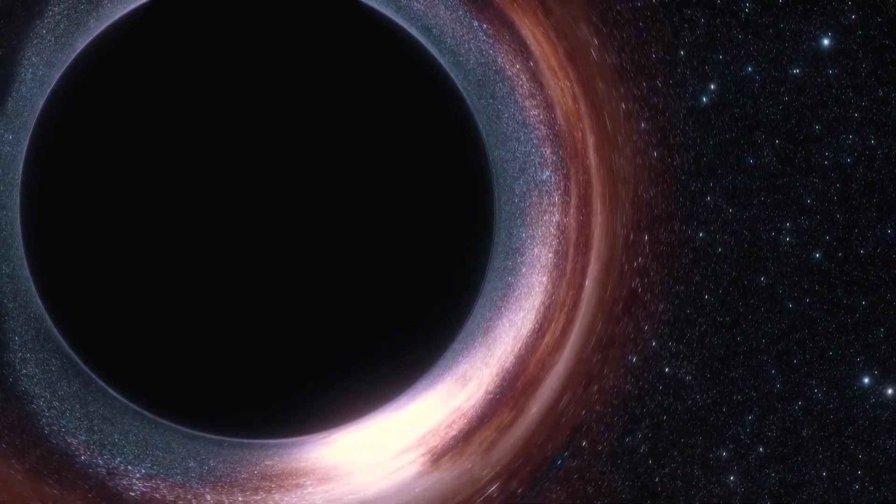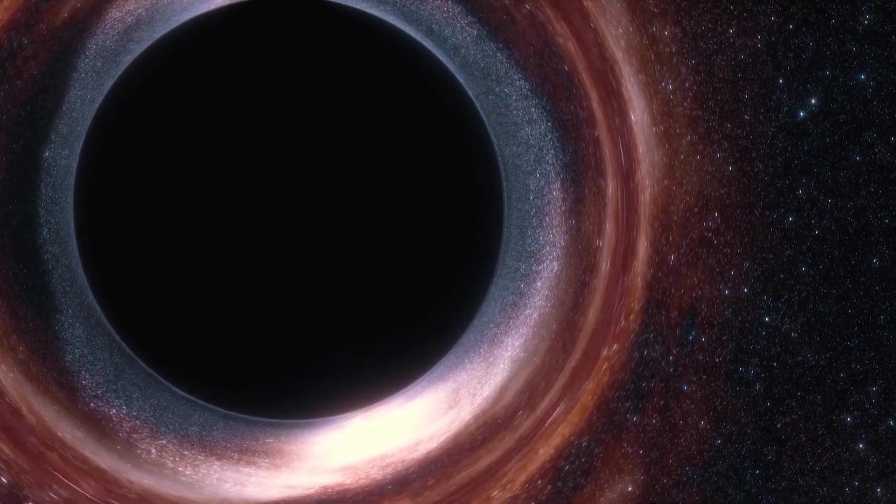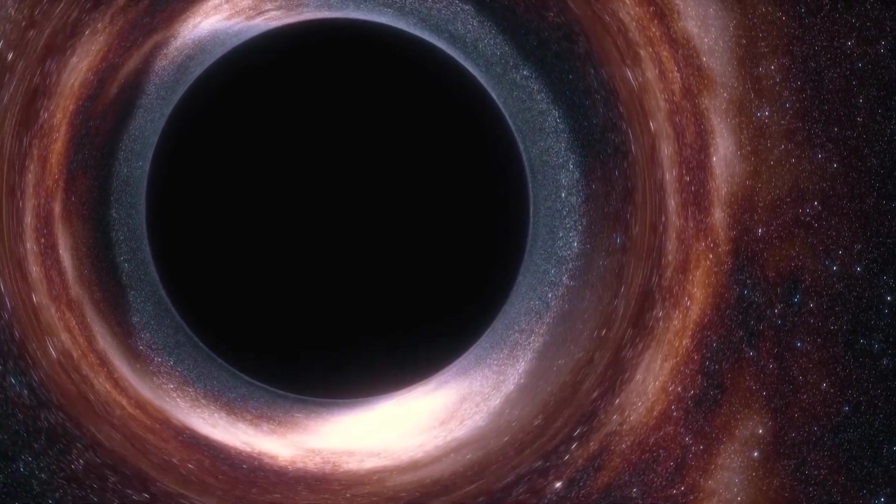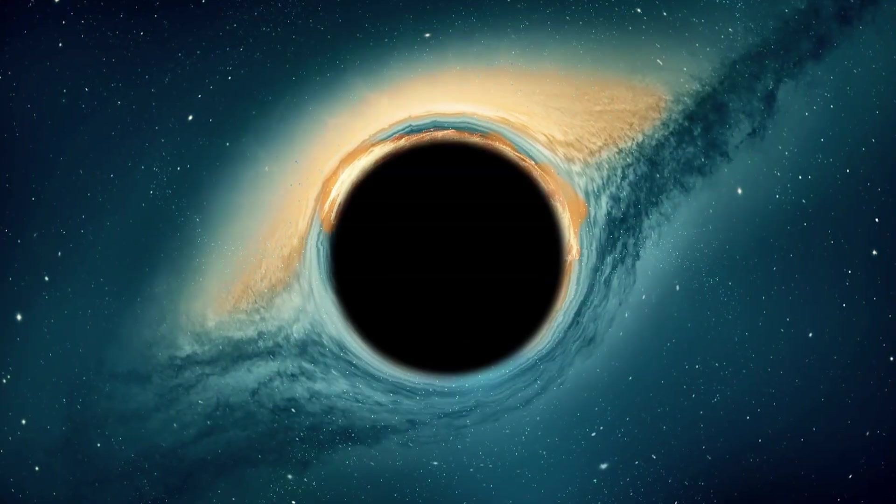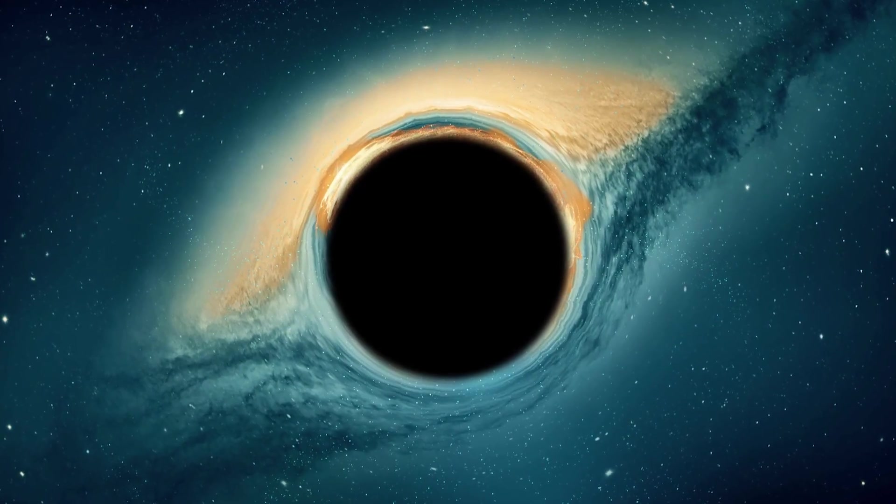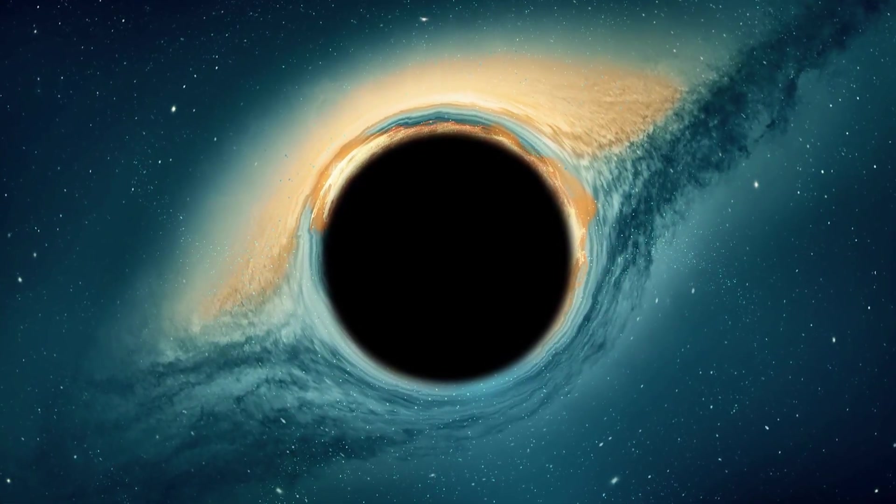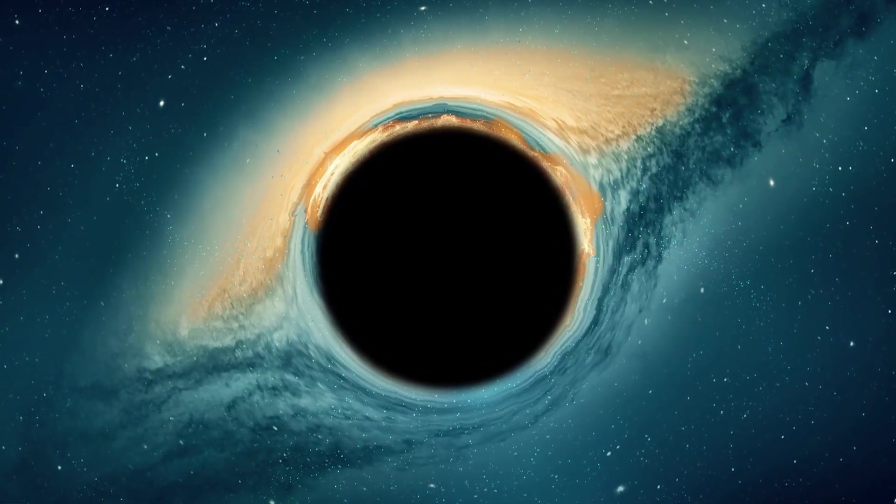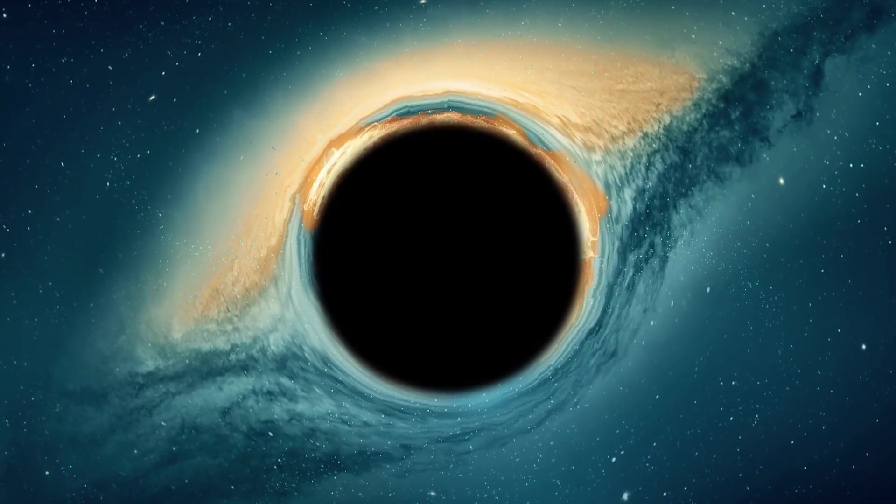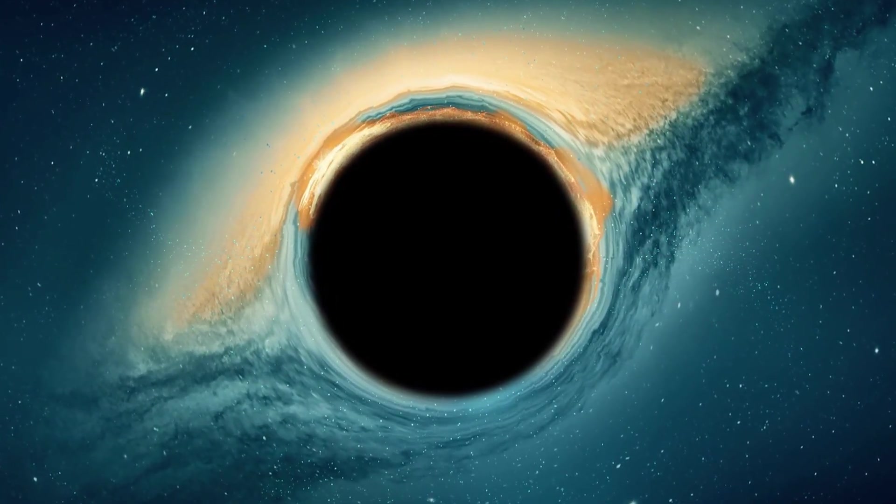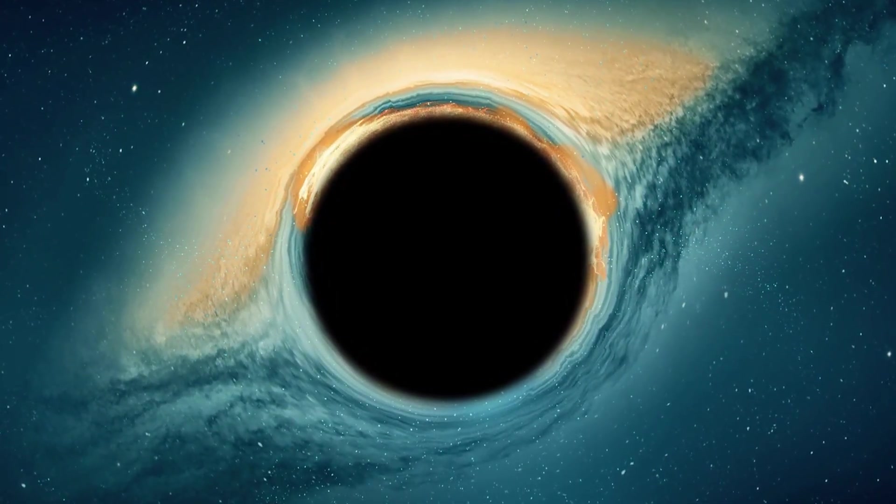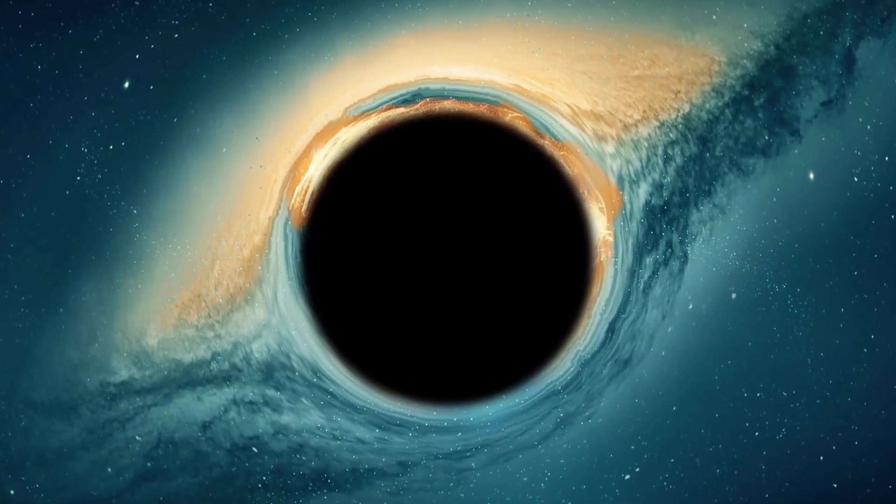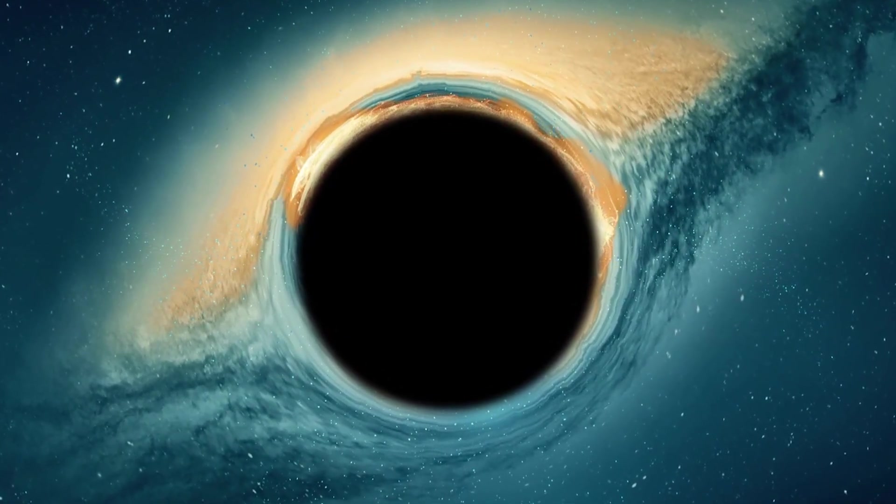As we well know, black holes possess extremely powerful gravitational force that even light cannot escape. However, in the vicinity of a black hole, one often finds a spinning disk of material, such as gas or dust, concentrated by its immense gravity. This material heats up as it spirals towards the black hole, emitting X-rays and other types of radiation, creating a luminous ring known as a corona.